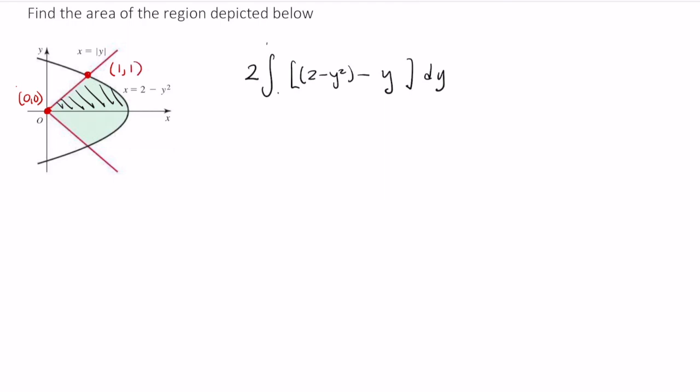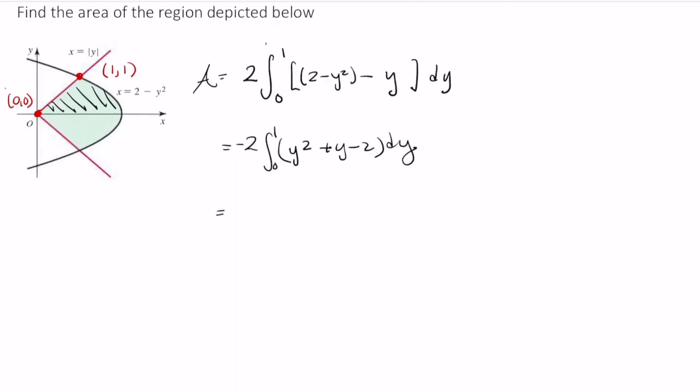So my limits of integration are from 0 to 1, so my area is represented by this integral. Let's go ahead and integrate after a quick rewrite, though. I'm going to rewrite this to be y squared plus y minus 2 dy. Let's integrate, so I have negative 2 times y cubed over 3 plus y squared over 2 minus 2y, and I'm evaluating from 0 to 1.